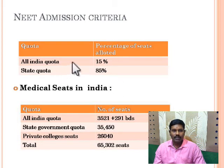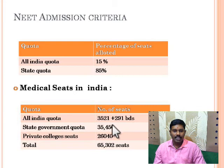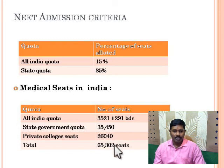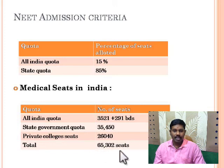Regarding admission criteria: All India Quota will be 15 percent and state quota will be 85 percent of the total government seats. There are 39,000 government seats all over India — the All India Quota accounts for 3,500 plus 291 BDS seats, and the state government quota has 35,000 seats. Private college seats number 26,040, giving a total of 65,302 MBBS and BDS seats in India.